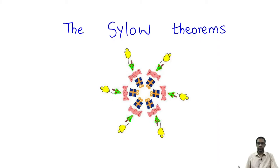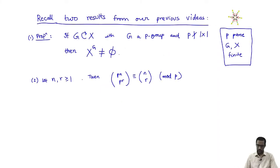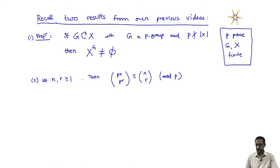Today we will start talking about the Sylow Theorems. Let me first recall two results that we spoke about in our previous videos. The first one was the proposition we started out with: if G is a group which acts on a set X, both G and X being finite, and if G turns out to be a p-group, p is a fixed prime, and the cardinality of X is not divisible by p, then there exists a fixed point for the action — the set of fixed points is not empty. This was proved by analyzing orbits and stabilizers.